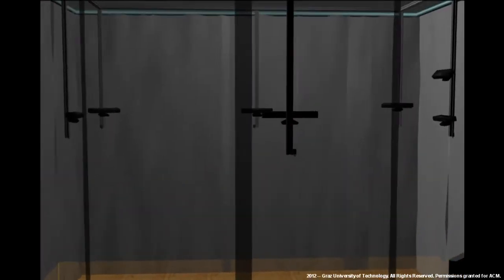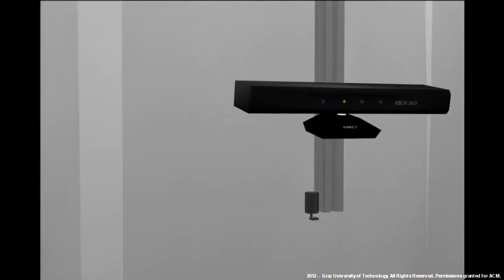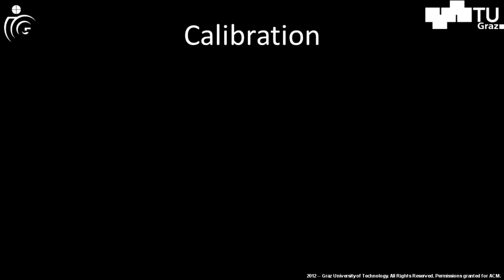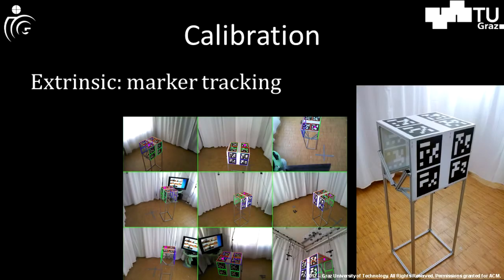In this video we show also some of the software enhancements which we have developed in this context. Our system can be calibrated with two methods. First, we use an artificial marker tracker to obtain extrinsic camera parameters.